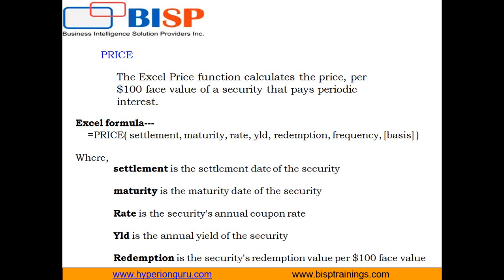Next we have the maturity date — it is the date the bond will be paid off. Next we have the percent coupon, which is the bond's interest rate used to determine how much money is paid to an investor every time a coupon is due. Next we have the yield, which is the bond's annual yield — the amount of interest that accumulates during a year.